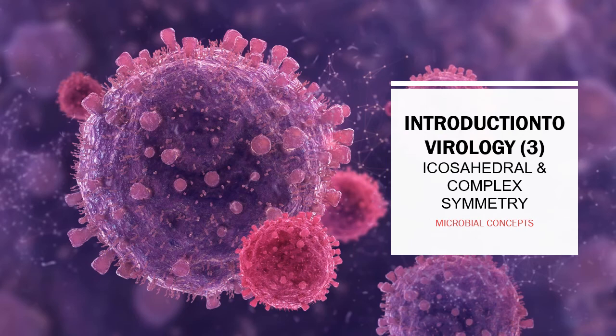This is the third video where we will discuss icosahedral and complex symmetry. In the second video, part 2 of the introduction to virology, we covered the M protein (matrix protein) and helical symmetry. This is part 3, and in part 4 you will study about prions and viroids.